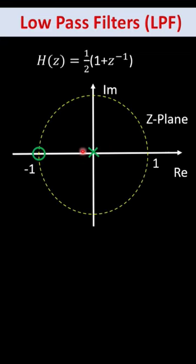When H(z) equals 1/2(1+z^-1), the pole is at the origin and the zero is at z = -1.